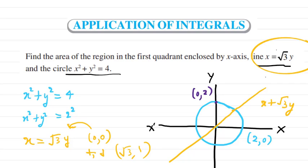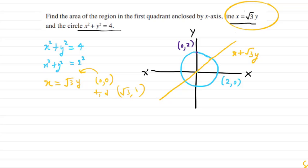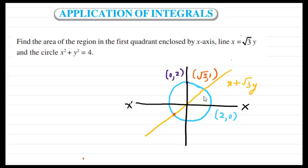Whenever you have two curves or two equations, the first thing is to find the intersecting point. To get the intersecting point of these curves, we solve the equations. We put x = √3·y into the circle equation x² + y² = 4. Substituting gives 3y² + y² = 4, so 4y² = 4, which gives y = ±1. For the first quadrant, y = +1, so putting y = 1 back gives x = √3. The intersecting point is (√3, 1).